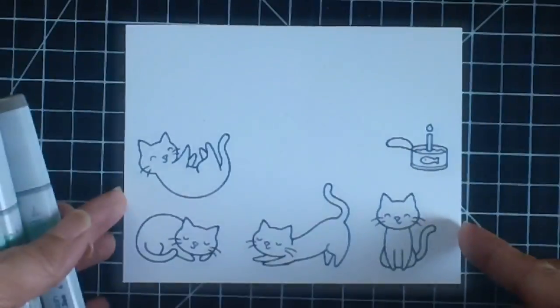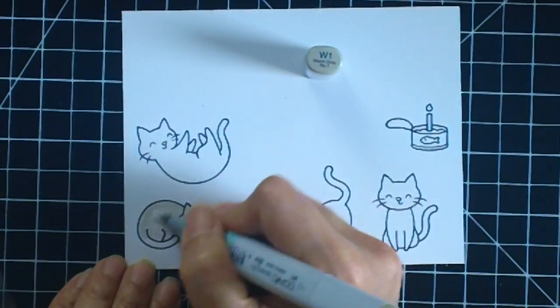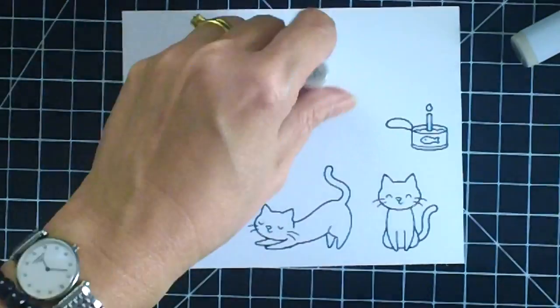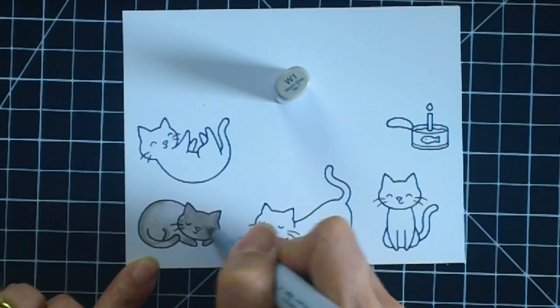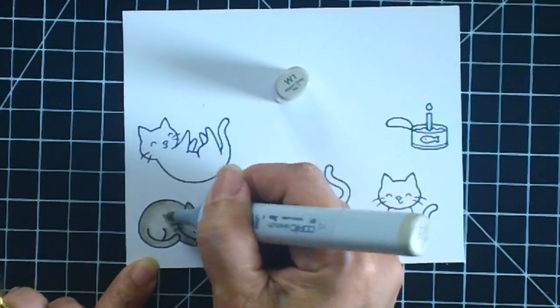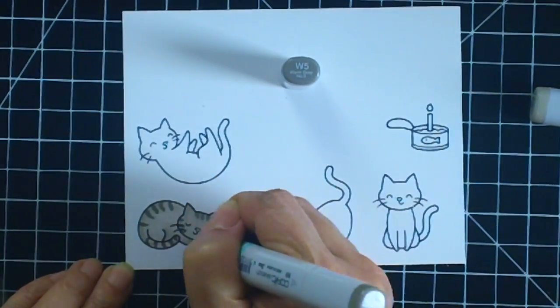I'm going to use my Copic markers to color the cats in, and for the sake of time I'm only going to show you one coloring here. They're all pretty much the same. I've used the same Copic markers, but this one right here has stripes and then the other two look like they are Siamese cats.